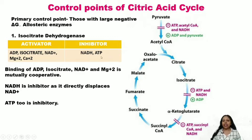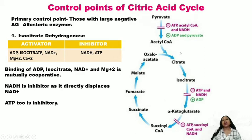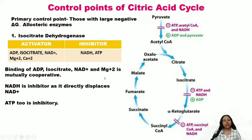The inhibitors of isocitrate dehydrogenase are NADH and ATP. Remember: the primary role of the citric acid cycle is to provide NADH and produce ATP or GTP. When the cell is in high energy demand, the citric acid cycle continues. Conversely, when the cell already has a high amount of ATP, it does not need to continue the cycle, so all allosteric enzymes of the citric acid cycle are inhibited by high concentrations of ATP.